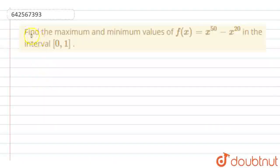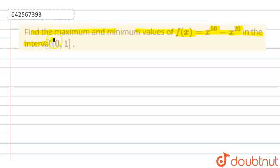The question is: find the maximum and minimum value of f(x) which is equal to x raised to the power 50 minus x raised to the power 20, in the closed interval [0, 1].